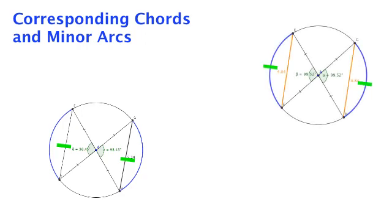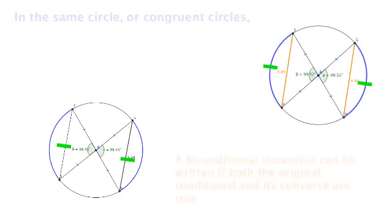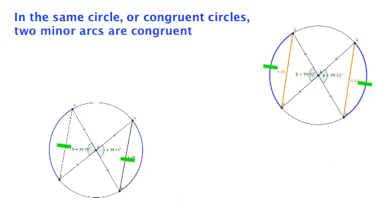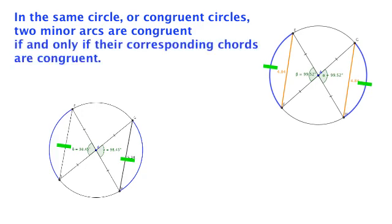So since we can prove this theorem in both directions, we can write it as a biconditional. In the same circle, or in congruent circles, two minor arcs are congruent if and only if their corresponding chords are congruent.